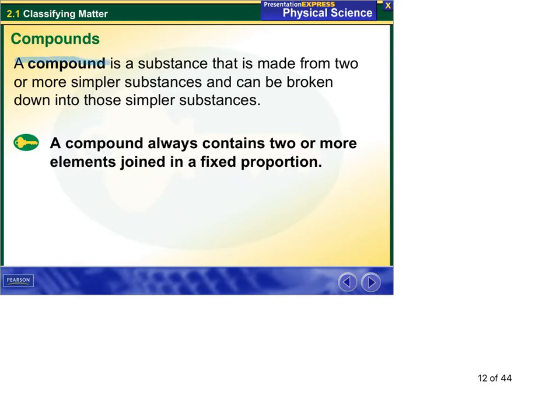Compounds are made up of two or more simpler substances and can be broken down into these simpler substances. A compound will always contain two or more elements joined in a fixed proportion.